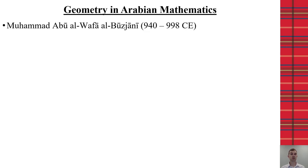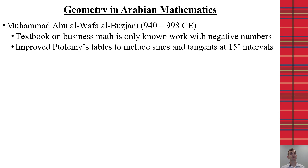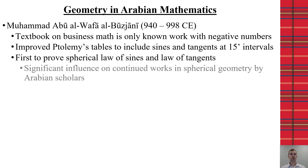Muhammad Abu al-Wafah al-Buzjani was one who had a textbook on business mathematics. He is one of the few Arabian mathematicians whose established works show negative numbers, as many other treatises do not. He also improved the trigonometric tables created by Ptolemy to include sines and tangents up to 15-minute intervals — very small intervals — and proved the spherical law of sines and law of tangents. We give him credit for much of the foundational work with tangents, and his contributions significantly moved spherical geometry forward.